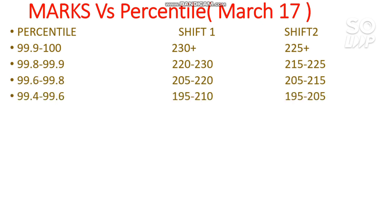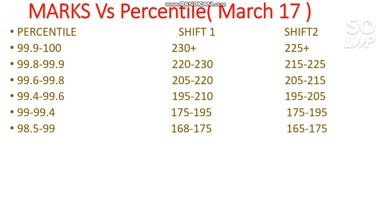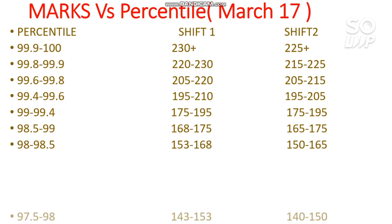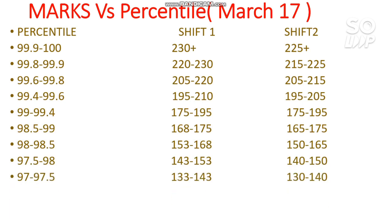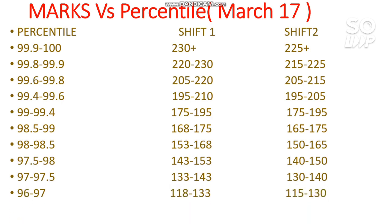For 99.4 to 99.6 percentile you need to score 195 for Shift 1. For 99 to 99.4 you need to score 175 to 195. For 98.5 to 99 it is 168 to 175, and for 98 to 98.5 it is 153 to 168. I am telling about Shift 1 only — you can check the Shift 2 data separately. For 97.5 to 98 you need to score 143 to 153, and for 96 to 97 you need to score 118 to 133.